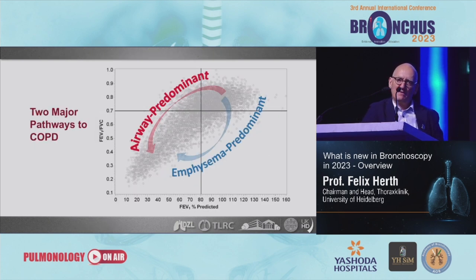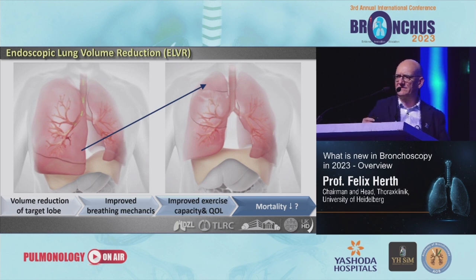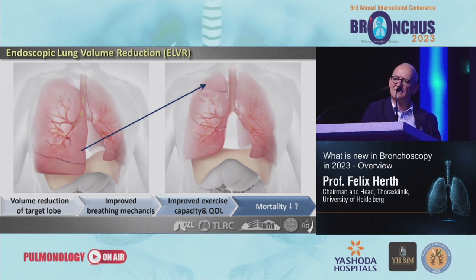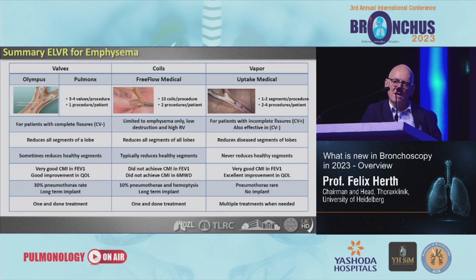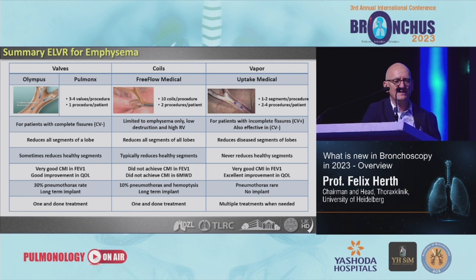The other big field where we are seeing rapid development is obstructive lung disease. It started with endoscopic lung reduction in 2002, and the first valves were placed. The idea of all those technologies is to make the hyperinflated lungs smaller — by reducing the size of the lung you improve breathing mechanics, improve exercise capacity, and reduce mortality. We currently have three techniques on the market: valves, coils, and vapor. Vapor and valves are also available here in India.